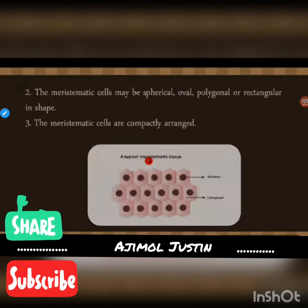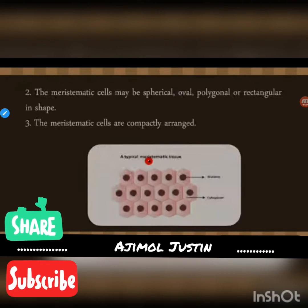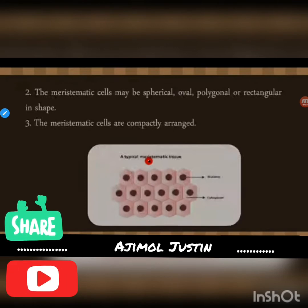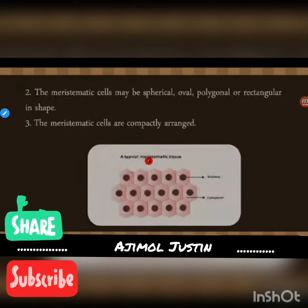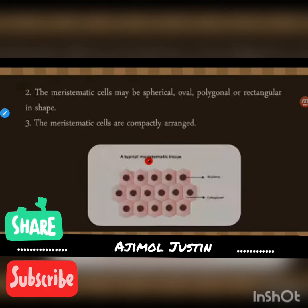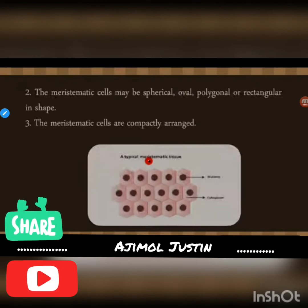The shape of these cells may vary. The meristematic cells are compactly arranged. In this figure you can see there is no space between cells — all cells are compactly packed with no gap in between them. This is also a characteristic of meristematic tissue.